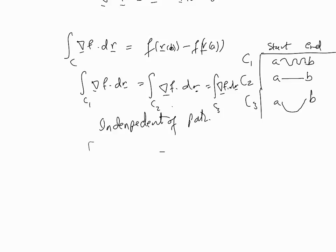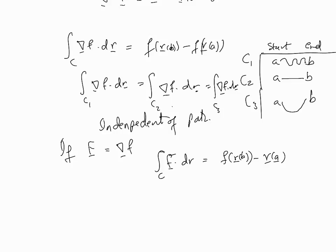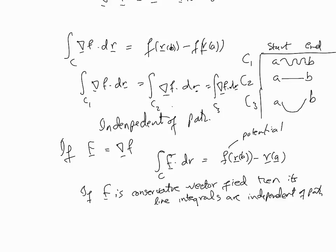If F is a conservative vector field, then this theorem applies as well: the integral of F dot dr equals the potential function evaluated at r(b) minus r(a). This further implies that if F is a conservative vector field, then its line integrals are independent of path.